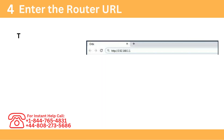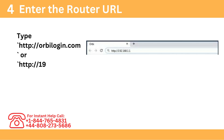Step 4: Enter the router URL. Type http://orbilogin.com or http://192.168.1.1 in the address bar.